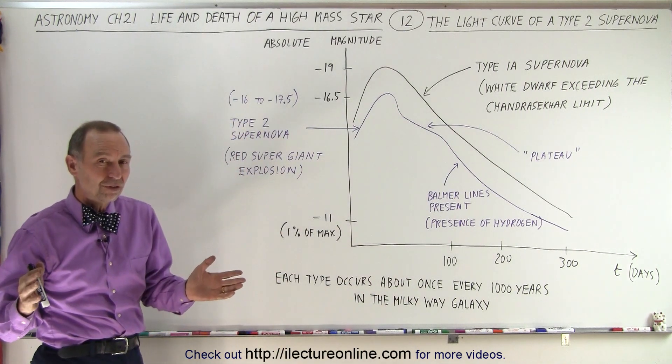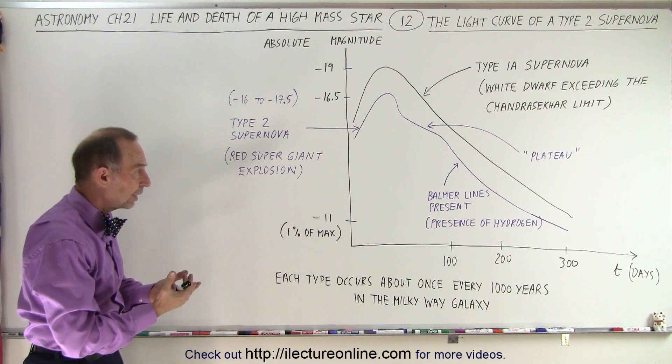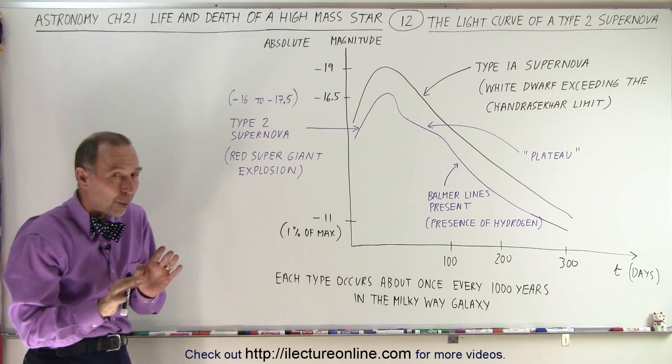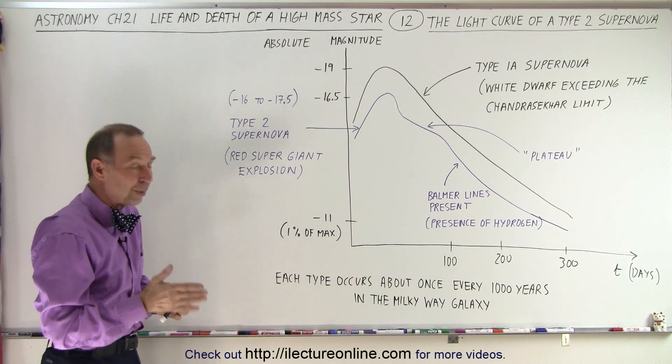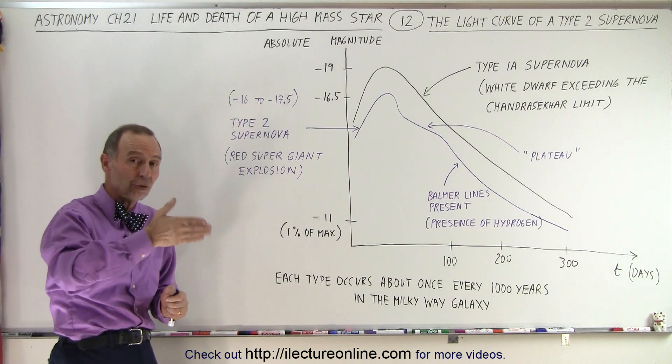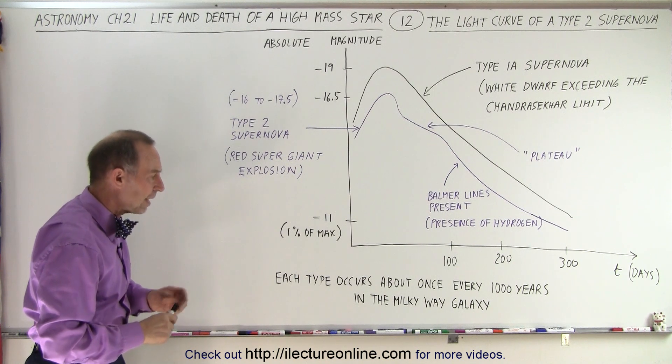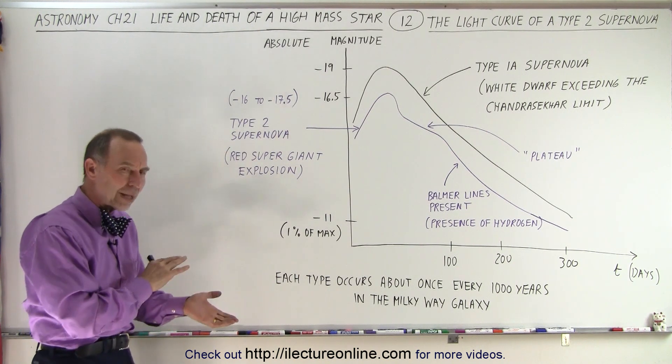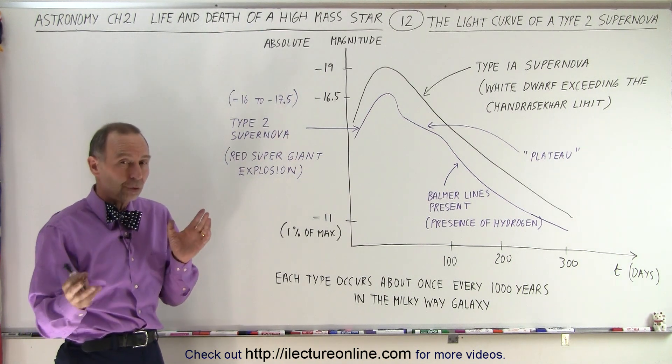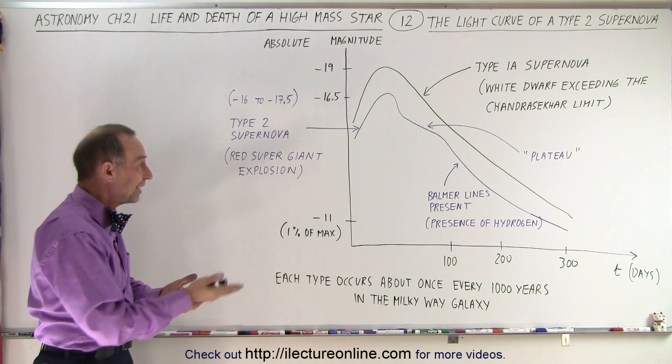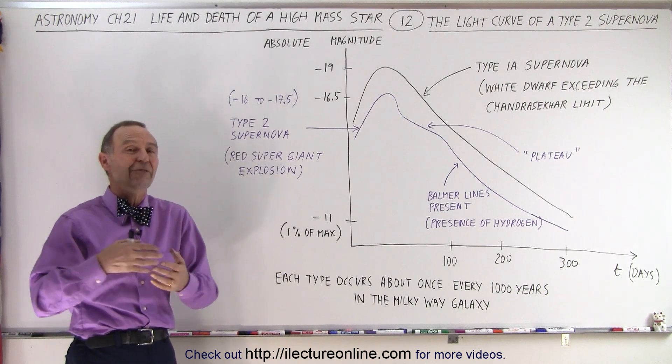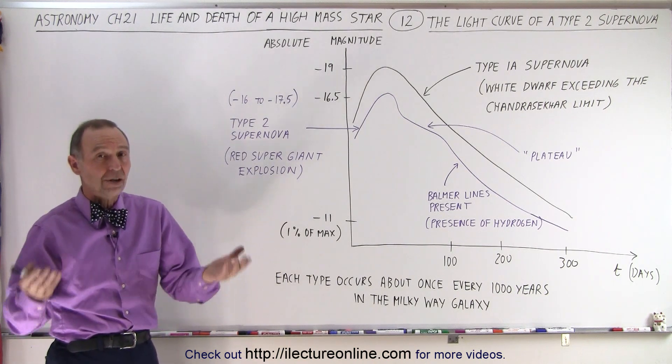Now how many of those supernovas happen or occur in our galaxy? It turns out that about once every 500 years we see a supernova explosion. We have historical data that those have occurred at about 500 year intervals. Now they occur, the Type 1a and the Type 2 supernovas occur at about the same frequency. So we can say that for each type they happen once every about 1000 years in our galaxy.